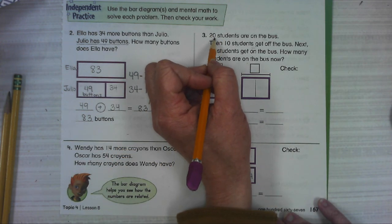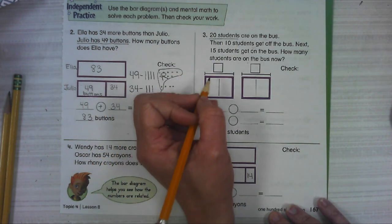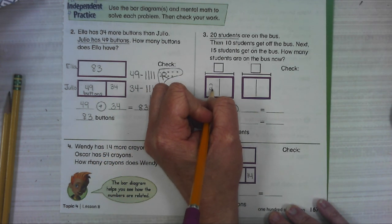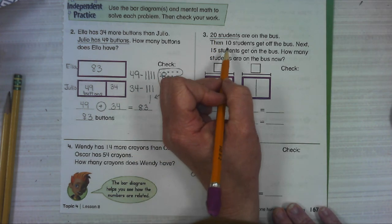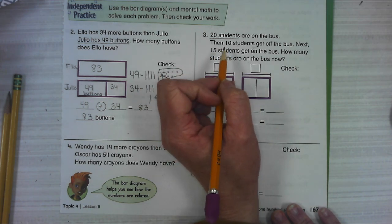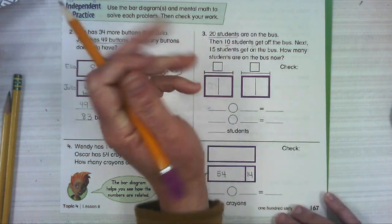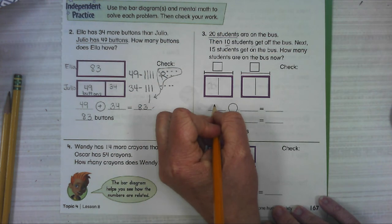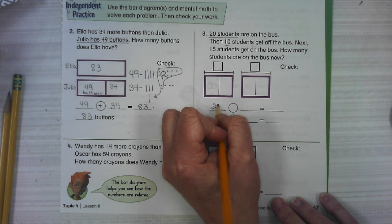We're starting out with 20 students. Let's put that here. 20 students are on the bus. Then 10 students get off the bus. That doesn't need to go here then. If students are getting off, I'm going to skip the boxes. To be honest, I think they're a bit confusing here. 20 students are on the bus.